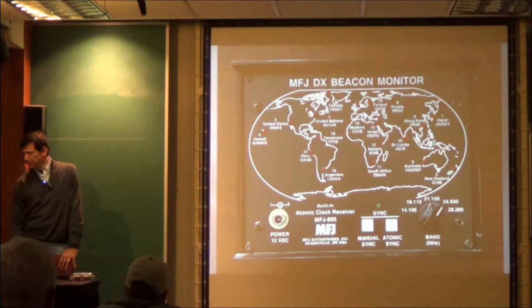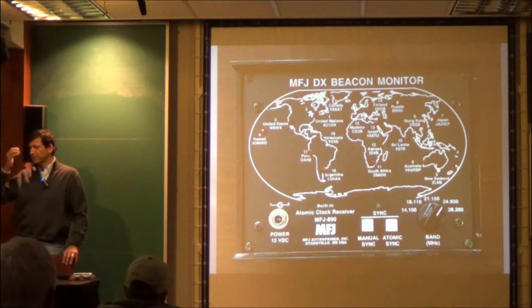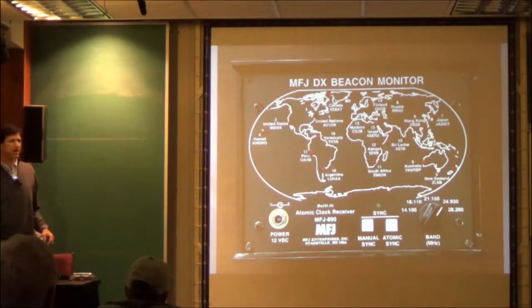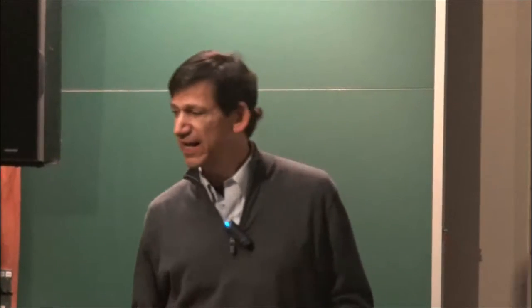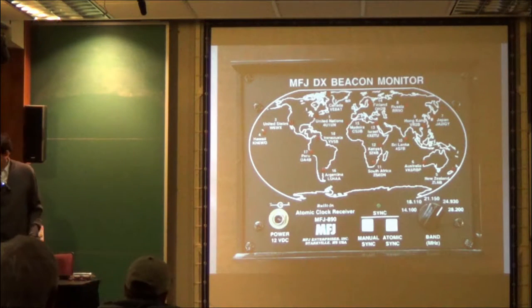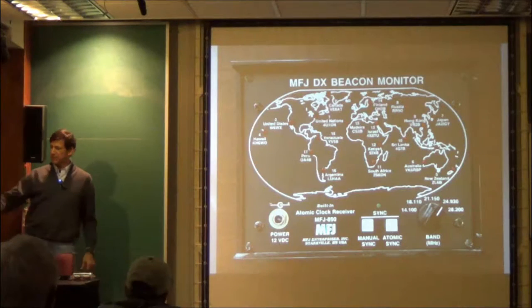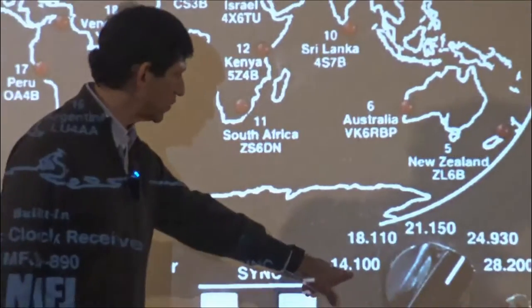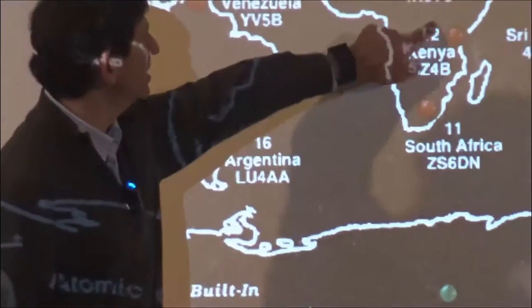And this is my beacon monitor. And this is really a fun little product that MFJ makes. And what it does is it has an atomic clock built into it. So you have to know exactly what time it is to really appreciate this thing. But while it has an atomic clock on it, it doesn't display the time. But let's say you switch this over to 20 meters. And these are the frequencies that the beacons operate out. And so let's say you set it to 14100. Then what happens is this light comes on every time one of these stations is transmitting.